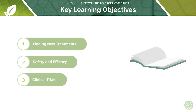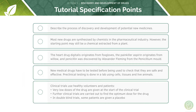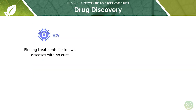These are our key learning objectives for today, and we're going to start off by looking at why we may actually need to discover new drugs. First of all, we may need to find treatments for known diseases which have no cure. HIV is a really good example — it is a disease that eventually kills the patient, but there still exists no cure even though a lot is known about the pathogenesis and how the disease process works.